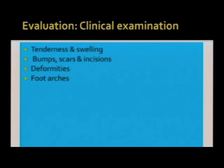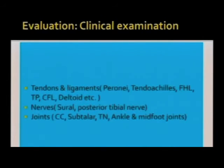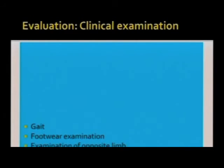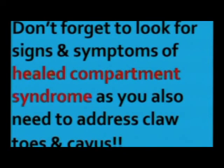You also need to examine for swelling, tenderness, bumps, scars, incisions, deformity, arches of the foot, tendons, ligaments, nerves, and adjoining joints. Examine the gait, footwear, and the opposite limb. Don't forget to look for symptoms of heel compartment syndrome, as the patient might have claw toes and cavus that also need to be addressed. You need to rule out reflex sympathetic dystrophy.